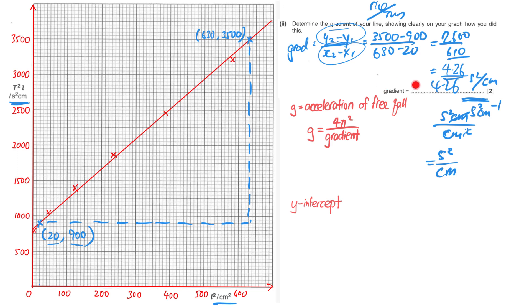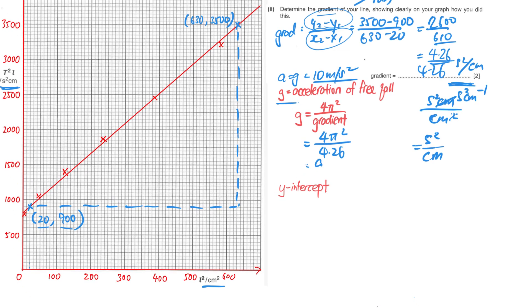Once you get the gradient, the next question will usually ask you to substitute the gradient into an equation. You may or may not understand the equation, but it doesn't matter — just follow the instruction. In this case they ask you to find the acceleration of free fall using 4π² over the gradient. You just substitute in 4.26 and you get 9.268, which rounds to about 9.3 meters per second squared. This is close to 10 m/s², which matches your theory, so you're on the right track.